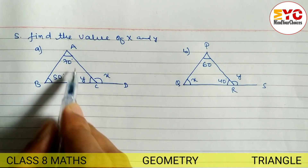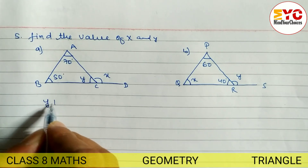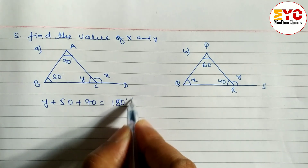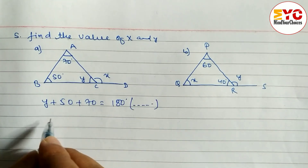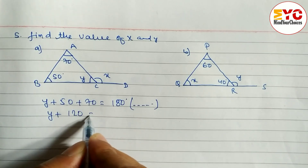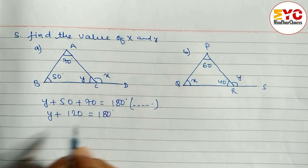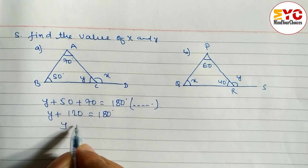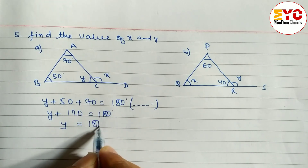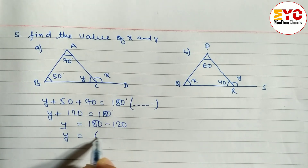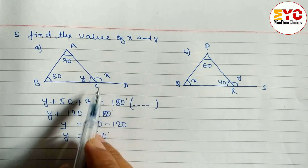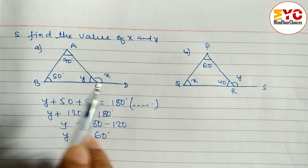Let's start. When you add these three angles — y plus 70 plus 50 — we get 180 degrees, because of the sum of angles of a triangle. So y plus 50 plus 70 equals 180 degrees. Adding 50 plus 70 gives 120, so y is equal to 180 minus 120, therefore y equals 60 degrees.